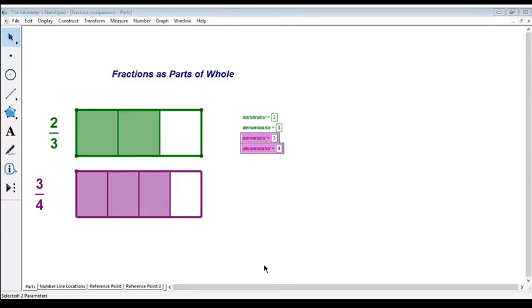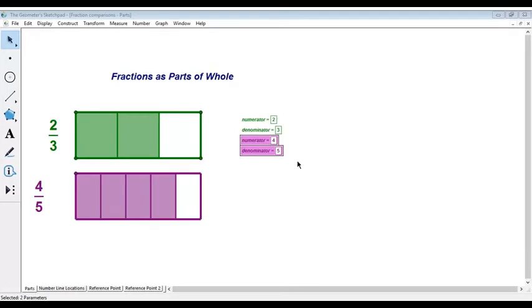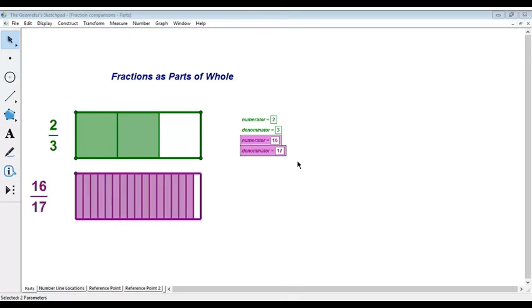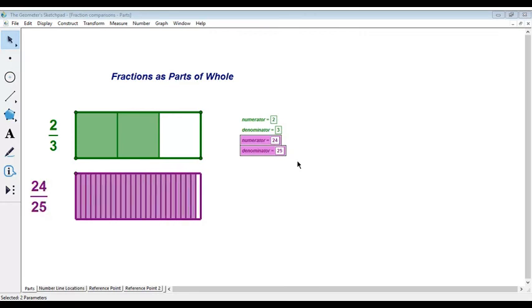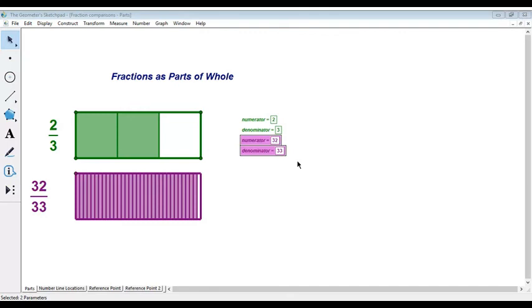Okay, I wanted to illustrate, with a better visual, this concept that the complement part, complement piece, which is this right here, the missing piece to make a fraction whole, as the denominator increases and the parts get smaller, that complement piece also is getting smaller, and the fraction is becoming closer and closer to being a whole than it was in the previous fraction.